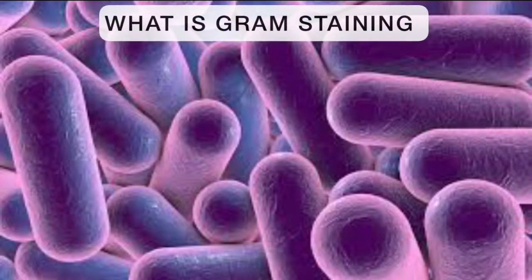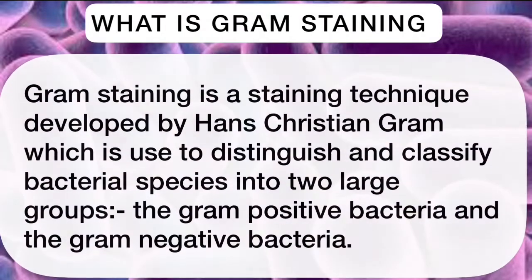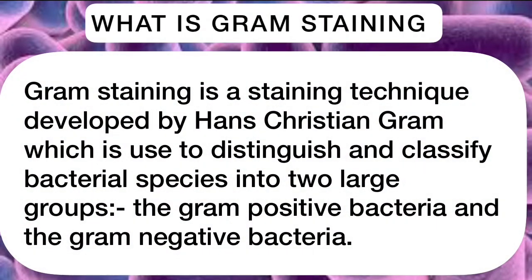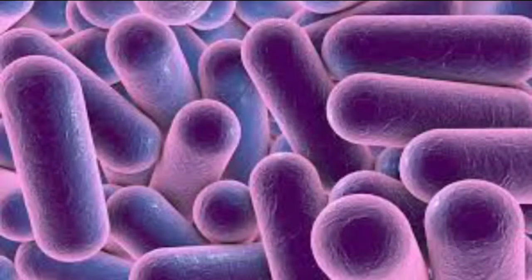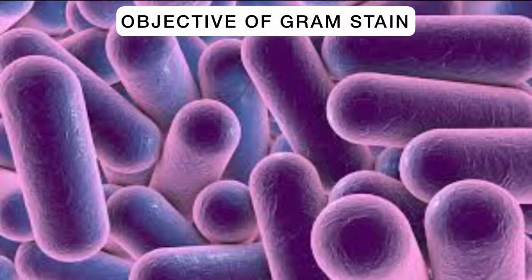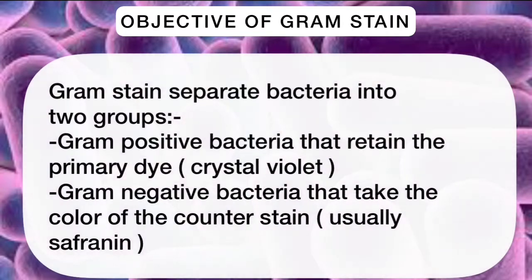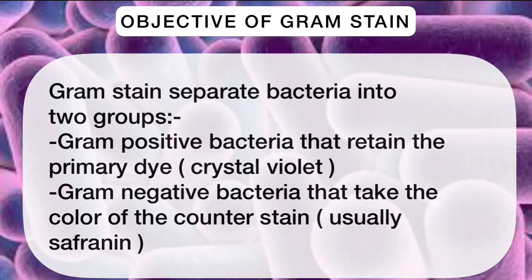Gram staining is a staining technique developed by Hans Christian Gram, which is used to distinguish and classify bacterial species into two large groups: the gram positive bacteria and the gram negative bacteria. Gram staining aims to separate bacteria into two groups — the gram positive bacteria that retains the primary dye, which is crystal violet, and the gram negative bacteria that takes the color of the counterstain, usually safranin.